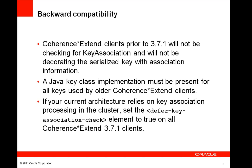A Coherence 3.7.1 cluster will support connections from older version Coherence Extend clients. These older versions will not be performing the key association check and will not be decorating the serialized key with the association information. Therefore, any custom key classes used by older version Coherence Extend clients must have a parallel Java key class definition available in the cluster. And again, if your current architecture relies on performing key association processing in the Coherence cluster, then you need to set the defer key association check element to true in each Coherence Extend 3.7.1 or later client.